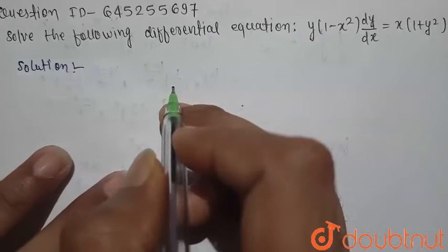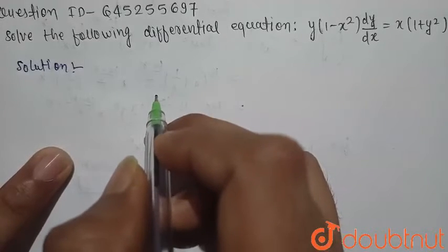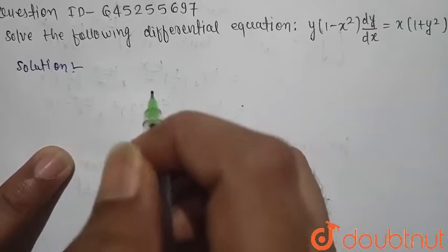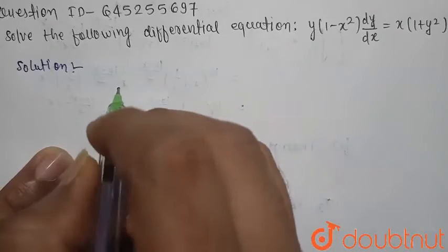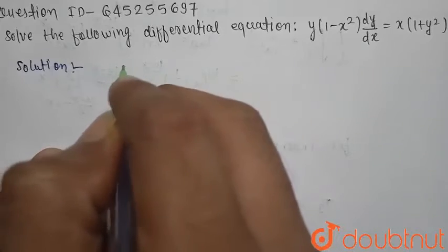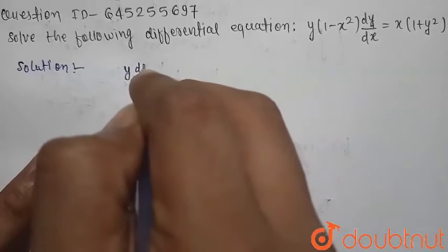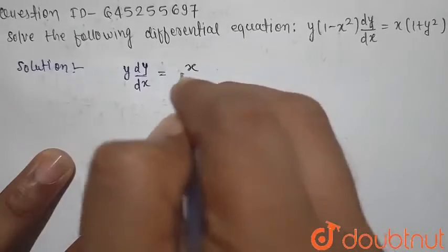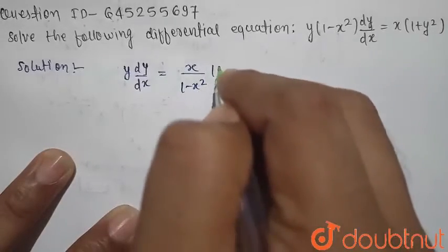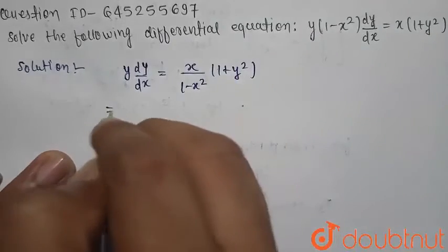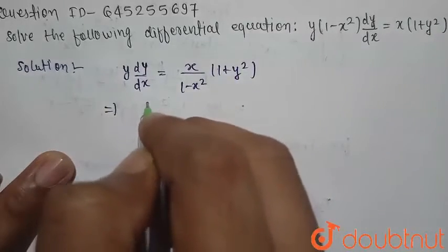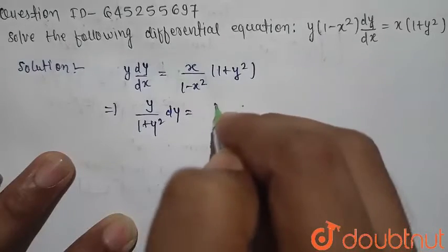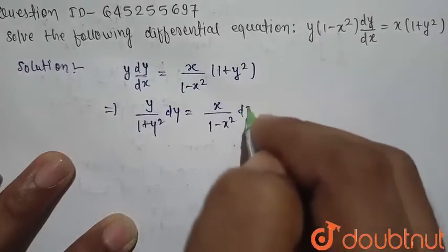We have to solve this differential equation: y times (1 minus x squared) dy is equal to x times (1 plus y squared) dx. We first separate the variables, writing y dy divided by (1 plus y squared) on one side, equal to x divided by (1 minus x squared) dx on the other side.